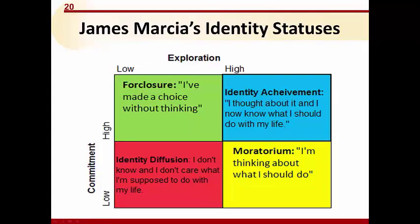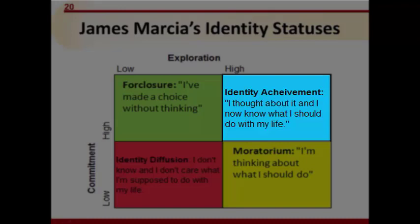The highest level — identity achievement — is when a student has had the opportunity to explore many options and has committed to a decision based on what they know. They have gone through a crisis, figured out their values individually, formed their own opinions, and did not rely on outside influences like peer pressure. Examples might include politics, religion, or academics. For instance, Richard read about vegan diets, consulted a nutritionist, found the research compelling, became a vegan, and has maintained it for three years — secure in his identity.